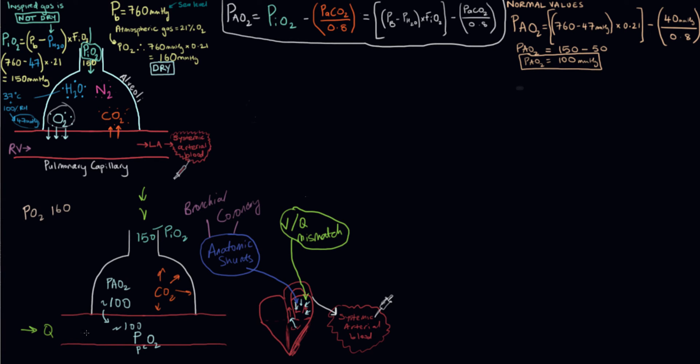If you have ventilation but no perfusion, you don't get gas exchange. Similarly, if you have perfusion but no ventilation, you don't get gas exchange. Any mismatching of these two can lead to poorly oxygenated blood entering the left side of the heart. There's a certain amount of physiologic VQ mismatch which is normal.